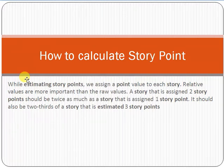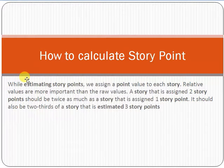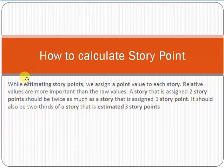Going back to the same example: story one is that the user can do payments through ecommerce, and story two is that the user should be registered on the ecommerce store. We can assign point one to registration and point two to ecommerce payment through credit card — because payment through credit card is more complex compared to registration. That's why we assign value one to registration and value two to payment.